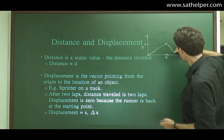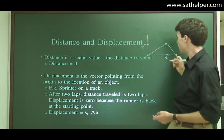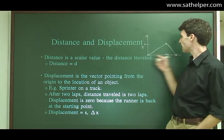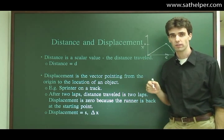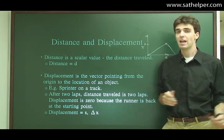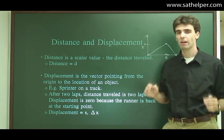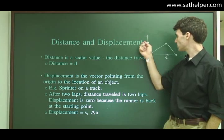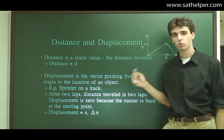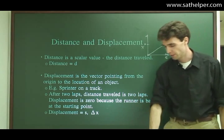So displacement and distance are equal at this point. Once you turn around and move back to the 0 point, now displacement is 0 because the person is ending at 0 where they started. They haven't actually gone any distance from their starting point. The distance traveled, the total distance traveled, however, is going to be 20. They've gone 20 out and 20 back. So in this example, the distance traveled is 20 and the displacement is 0.